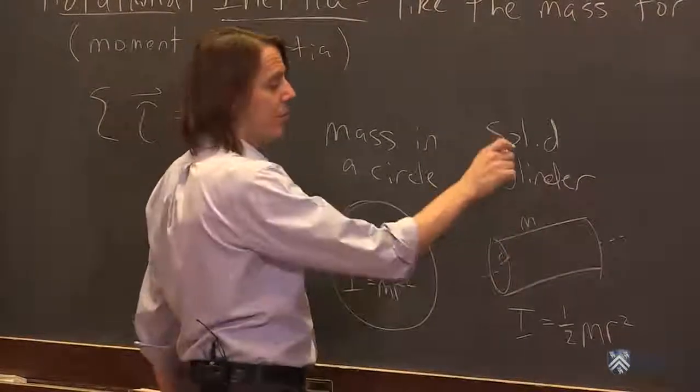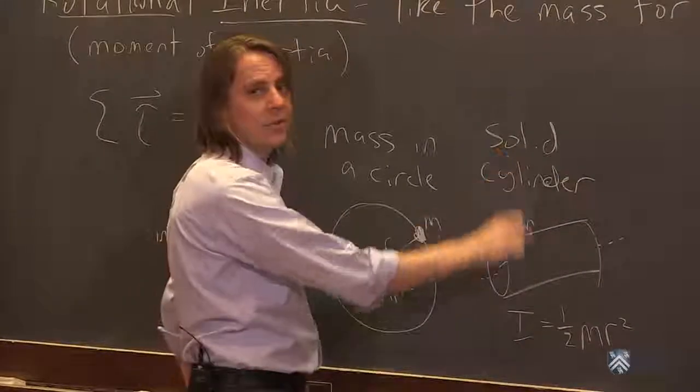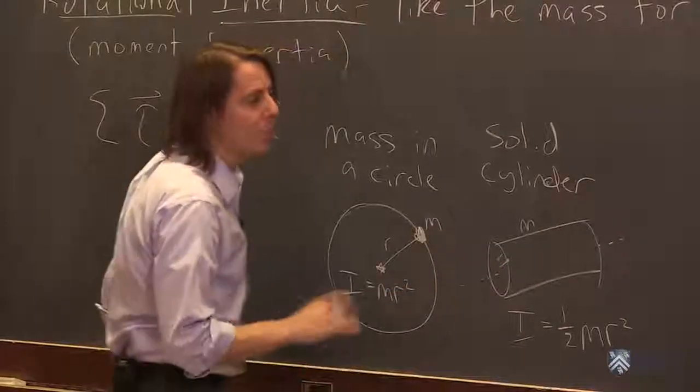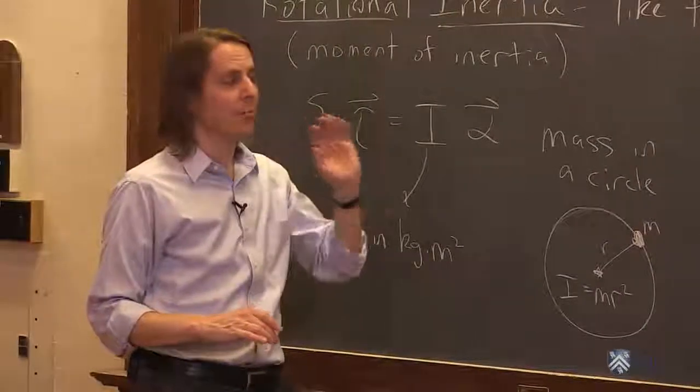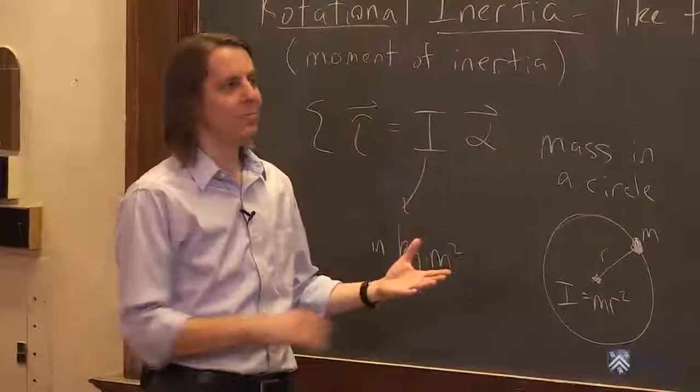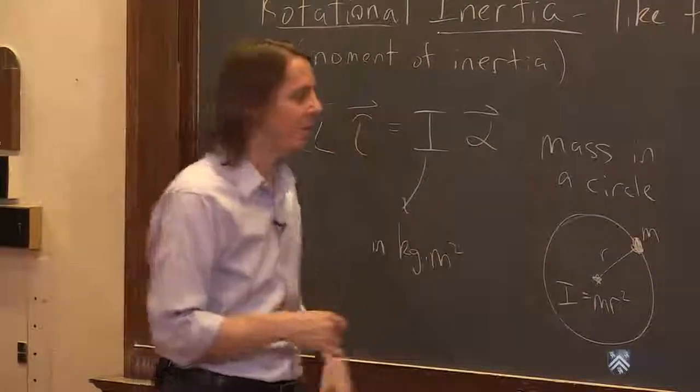But there are other axes you could consider. You could have the axis going like this and have it rotate around a vertical axis in the plane of the board. That would be a completely different formula. So a moment of inertia is not a property of an object. It's a property of an object about a specific axis. A single object can have many different moments of inertia because a single object can rotate about many different axes.